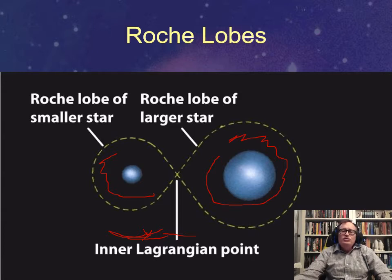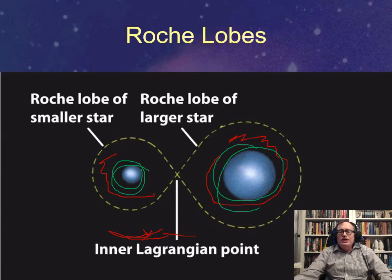But if you're in here you're basically going around that star. If you're over here you're basically going around that star. In between the two is something we call the inner Lagrangian point.